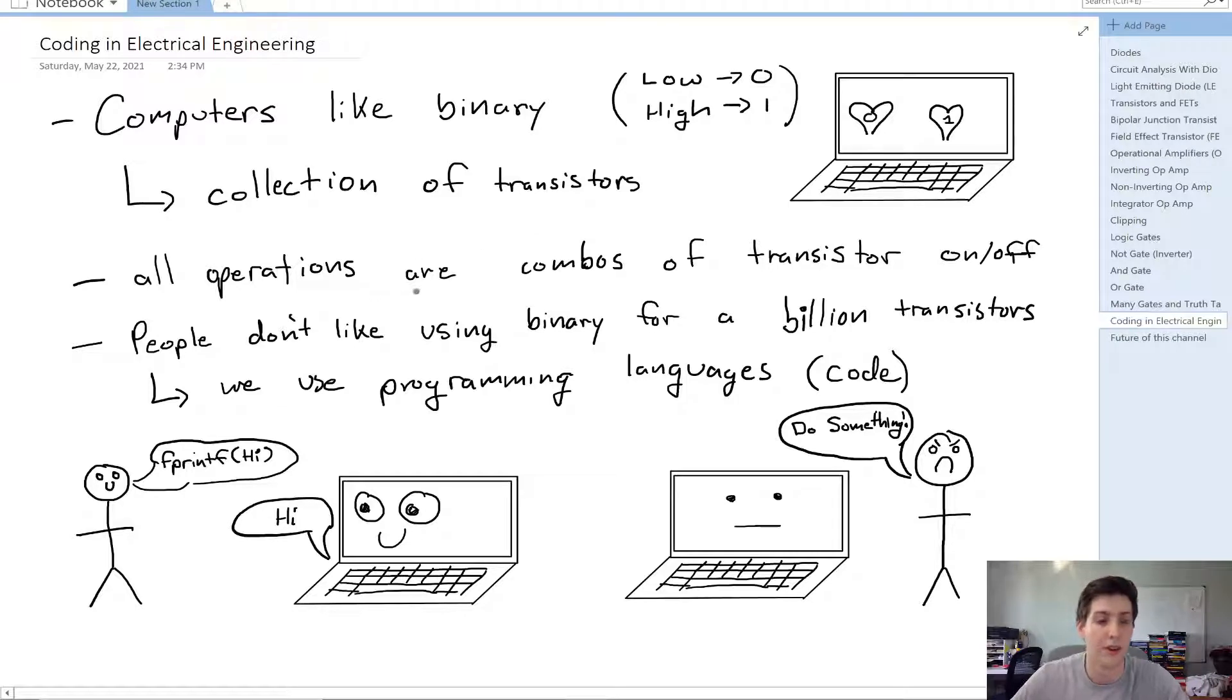So, why do we use code? Well, people don't like using binary for a billion transistors. Imagine if you had to go through one by one and set every one of those transistors either high or low for all of the operations. It would take a lot of time to do. So we use things called programming language, or code.